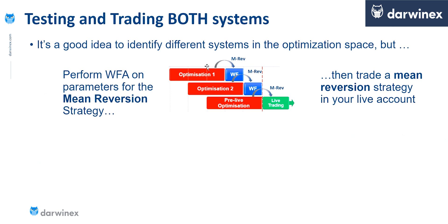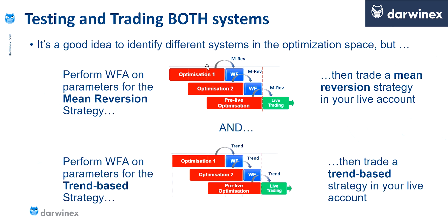And then the pre-live optimization has determined the best parameter values for the market conditions right now, in line with a mean reversion system. And then of course we could run a completely different walk-forward analysis using a range of values that were appropriate to a trend-following system. And because we're doing that, the walk-forward validation is based on that type of system, and the pre-live optimization is giving us the best parameters for the market conditions now, again for that type of system.